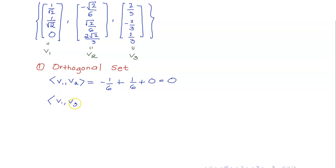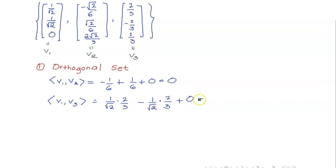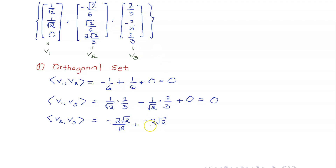Next, let us get the inner product of V1 with V3. This is 1/√2 times 2/3 minus 1/√2 times 2/3, plus 0 — the 2s cancel, so this is still 0. Lastly, we compute V2 · V3: we get −2√2/18 plus −2√2/18 plus 2√2/3 times 1/3, which is 2√2/9. Adding the first two terms gives −2√2/9, so the total is equal to 0.